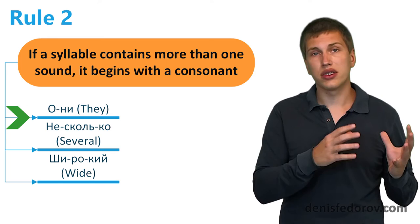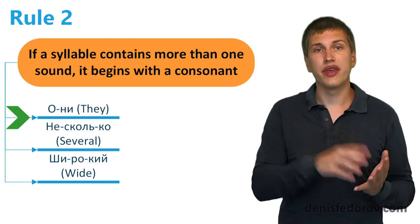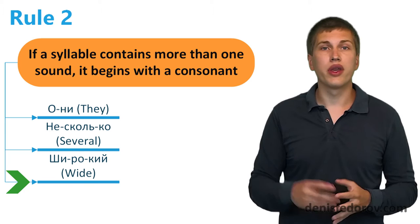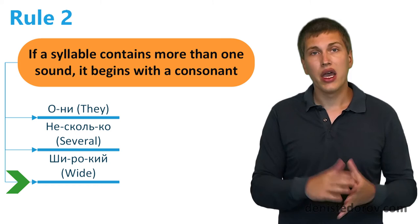Because according to the second rule, for all syllables that contain more than one sound, they start with a consonant. More examples. НЕ-СКОЛЬ-КО, ШИ-РО-КИ. Each of these syllables contains more than one sound and begins with a consonant, according to our second rule.